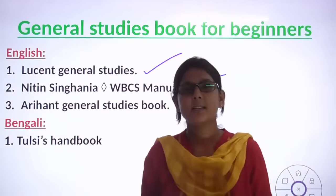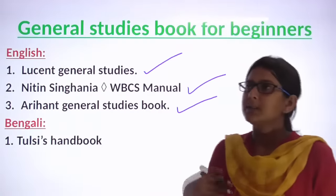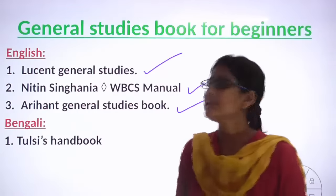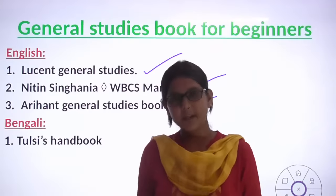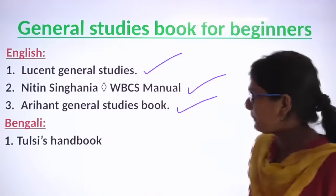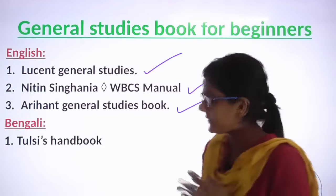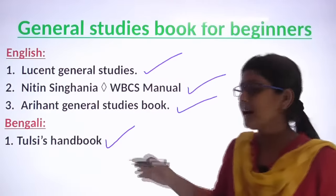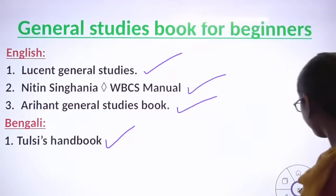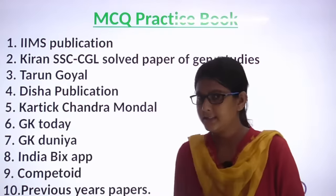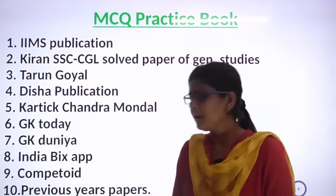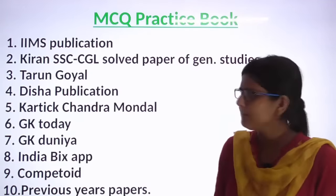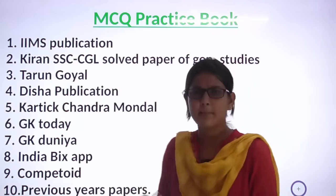There is static literature — world's highest, world's lowest, India's lowest — and most of the static data is in your Lucent General Studies. I will give you a link in the description of the video. If you want to see the Bangla version, I suggest the toolseed handbook. If you have a toolseed handbook, it is very helpful for Bangla students.